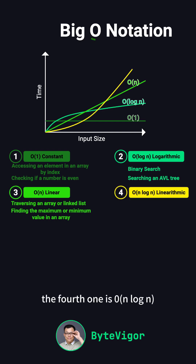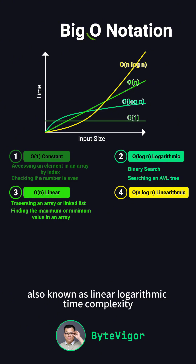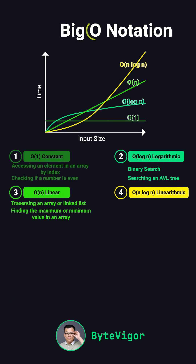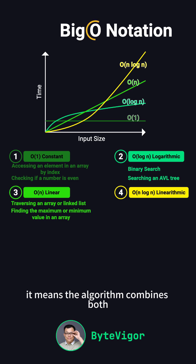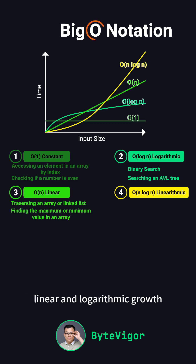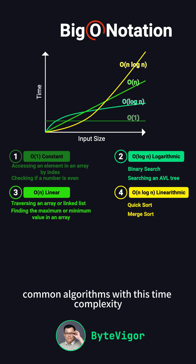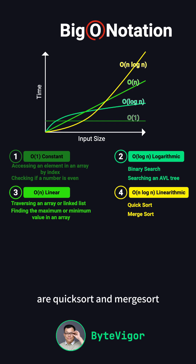The fourth one is O(n log n), also known as linear logarithmic time complexity. This often appears in efficient sorting algorithms, meaning the algorithm combines both linear and logarithmic growth. Common algorithms with this time complexity are quicksort and merge sort.